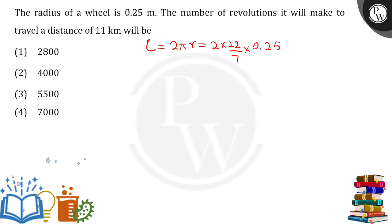If we know for one revolution, I can simply divide for 11 kilometers. First convert to meters: 11 kilometers will be 11,000 meters. For one revolution, the distance covered is 2 into 22 into 0.25 divided by 7.